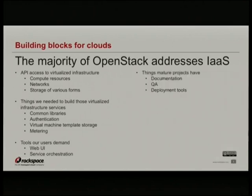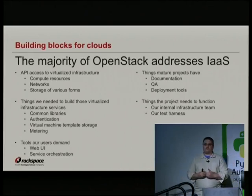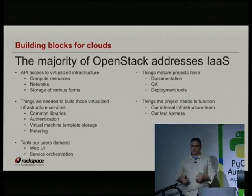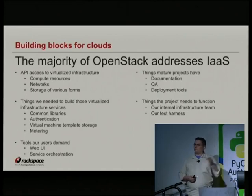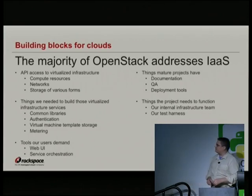There are things that big deployments need: we have a documentation project, we have a QA team, and we have a series of tools to help you deploy the software. This software is intended to run on — I think the smallest working cluster I've ever seen is five machines, but we also have people with 10,000 machines. There are tools around how do you deploy the software, how do you keep it up to date. For example there are puppet modules and chef recipes, and there's also a project that builds further automation around that.